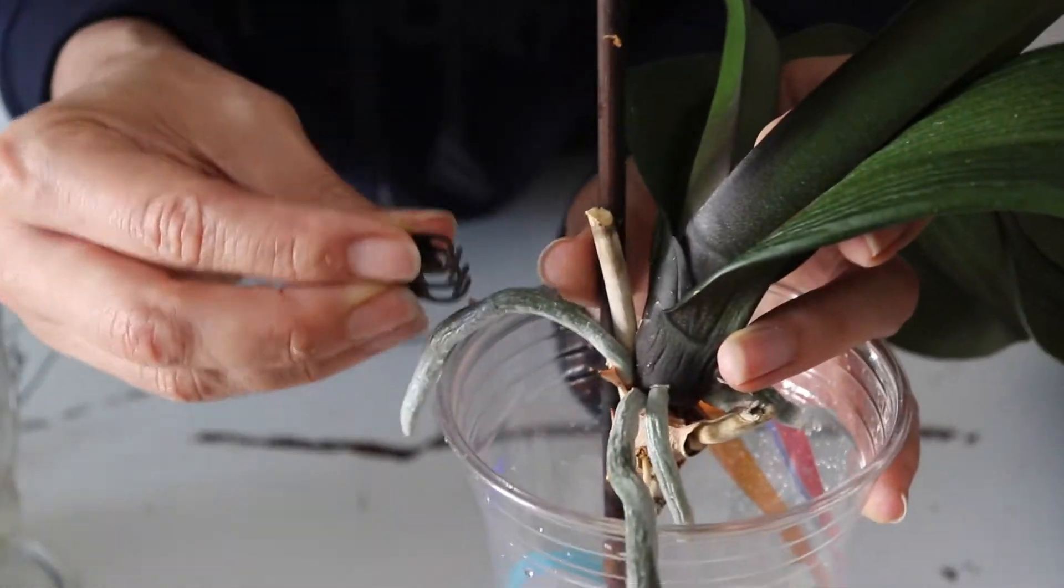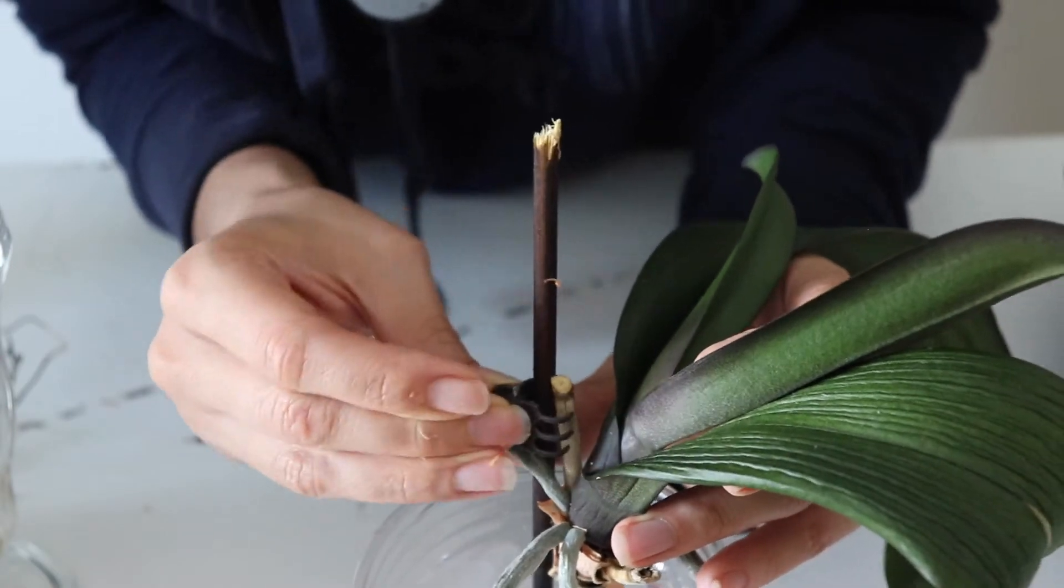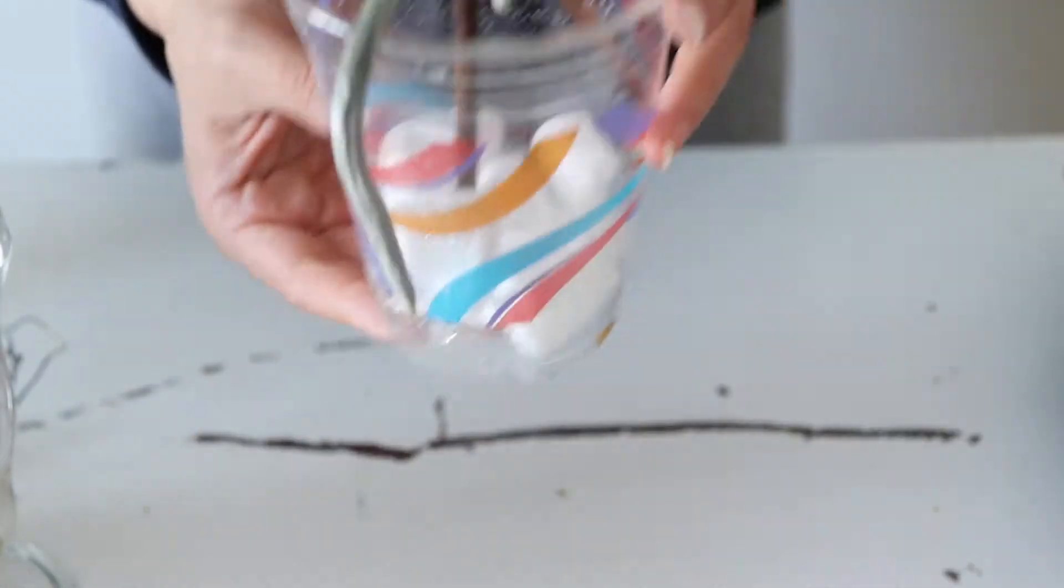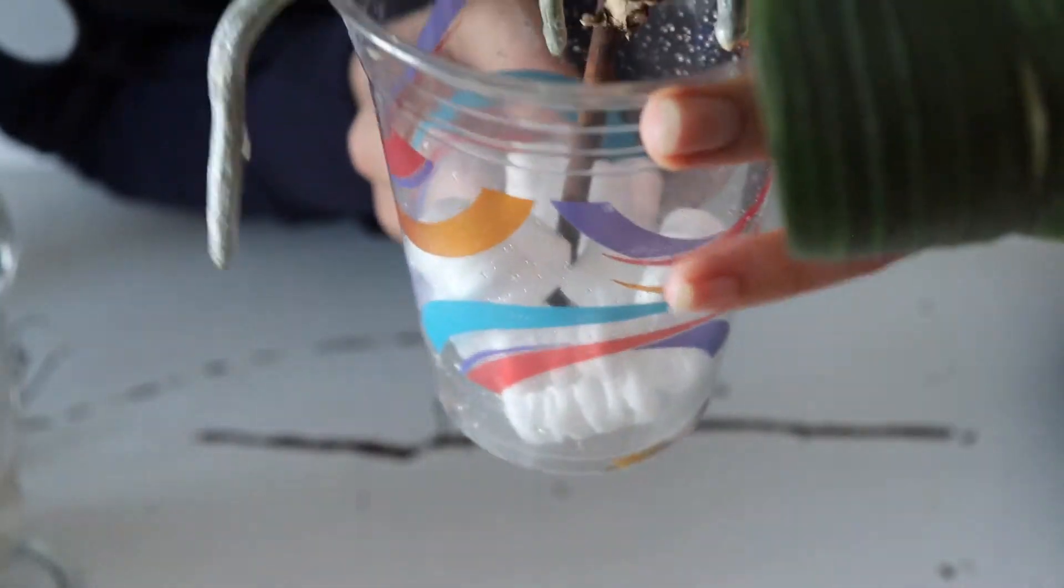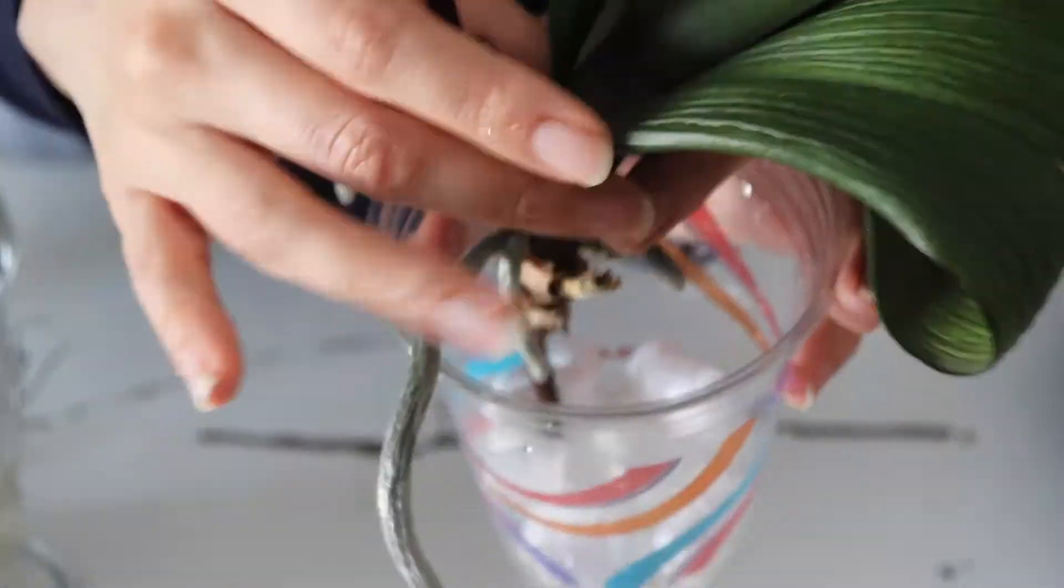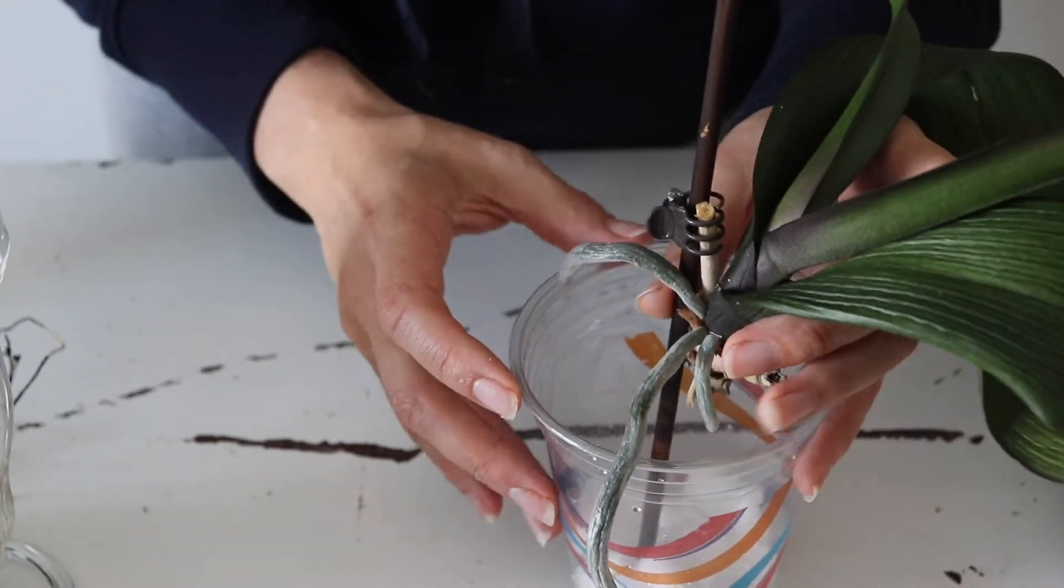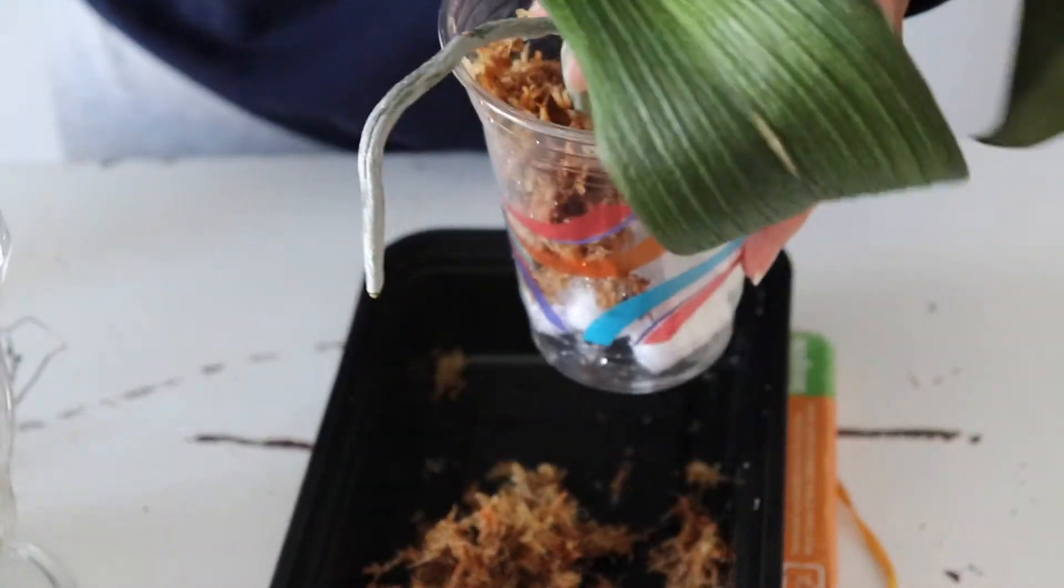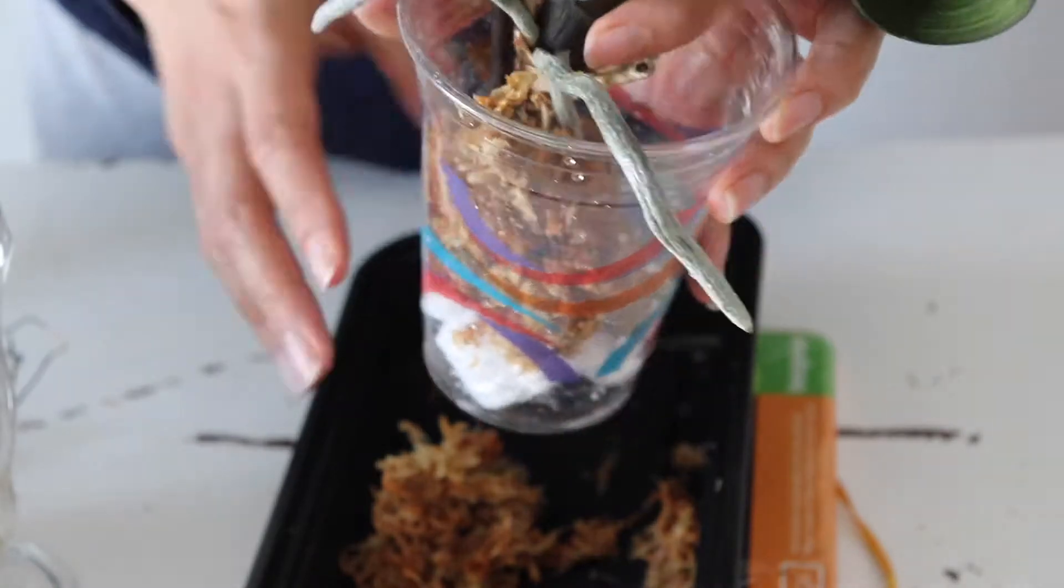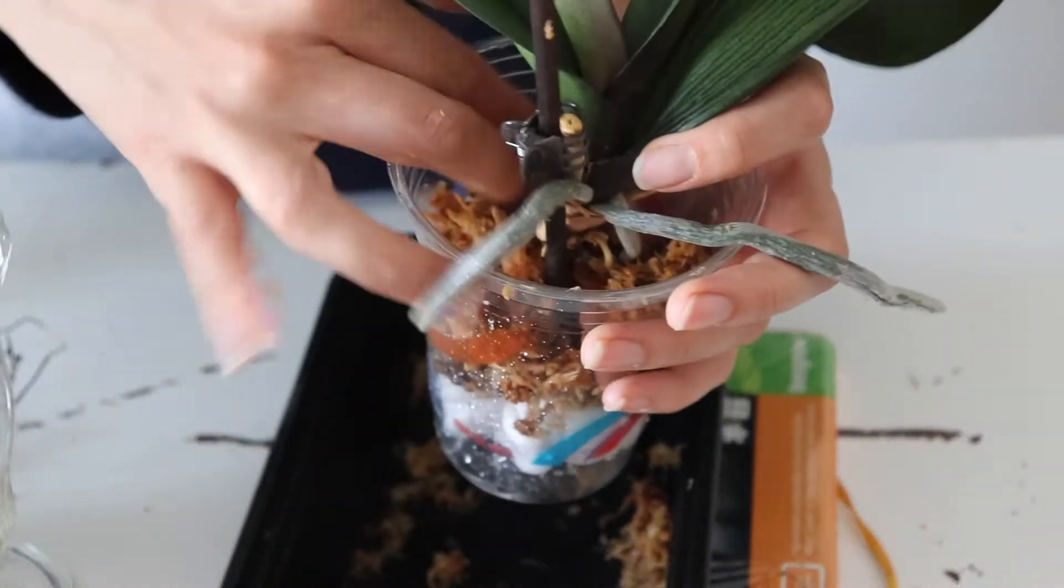I have seen orchids potted with moss with no drainage holes. My orchid arrangement, I have this orchid I bought at Fresh Market, and that one does not have drainage. What I do for that one is pour out the excess water. It's crazy because those two are the ones that have thrived the most.